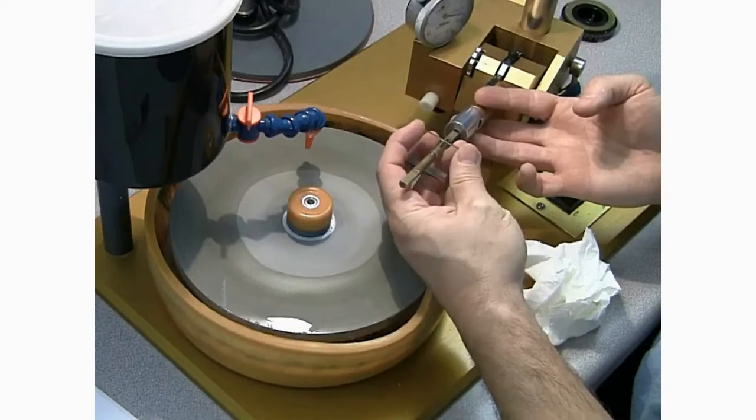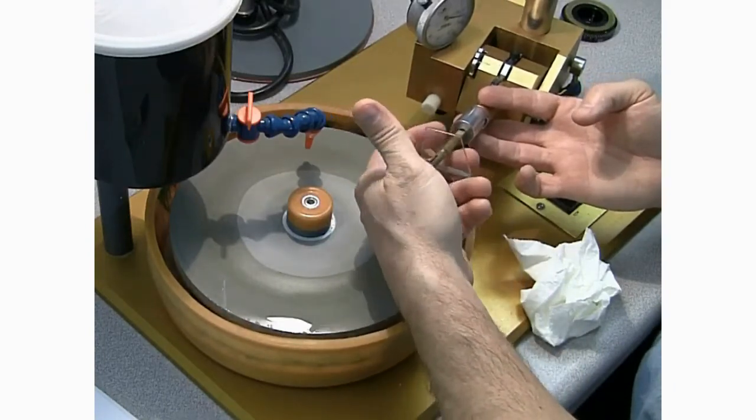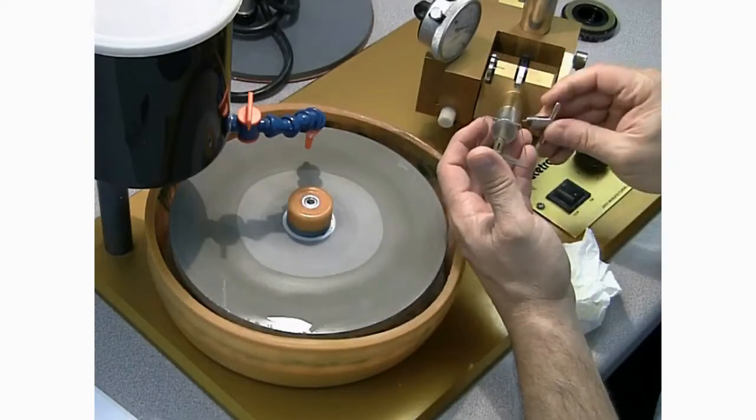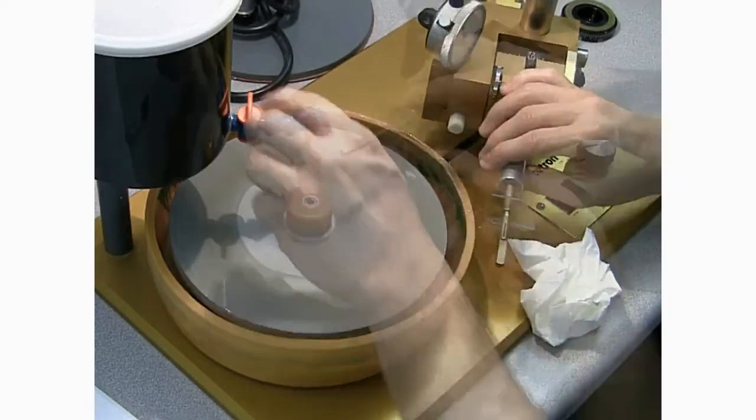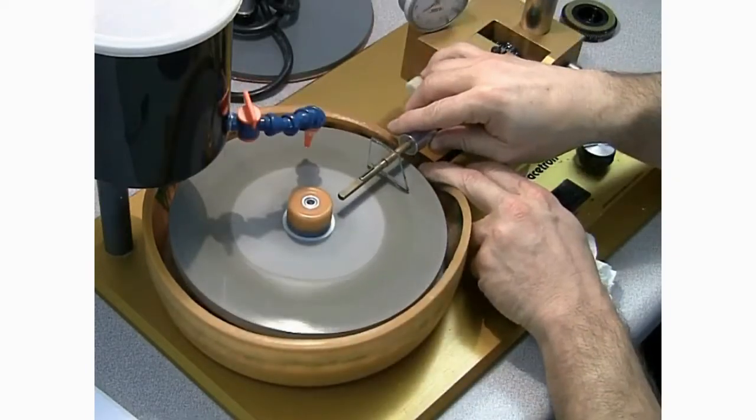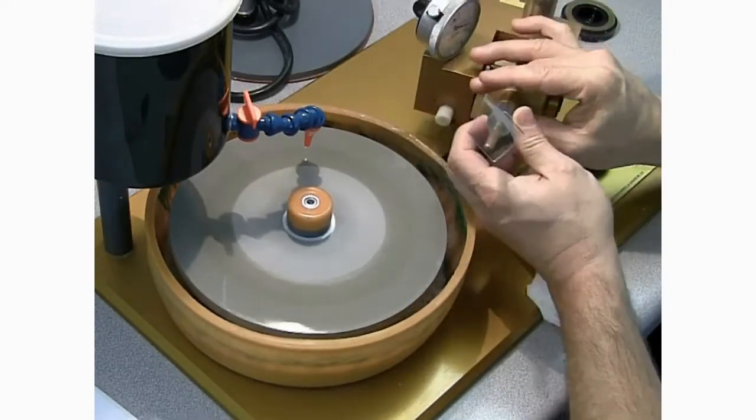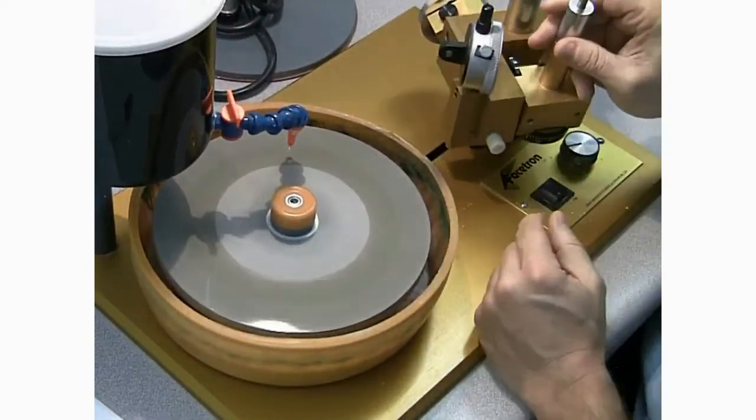We'll swap ends of the dop to simulate a transfer. Snug it back into the quill. And we're going to make just a light touch on the lap just to see where our contact gets made. Here's a close up photograph and in the near end you see just a tiny little corner removed from the piece of glass. That's how far off our transfer was the first time around.